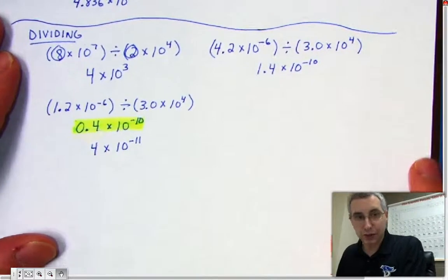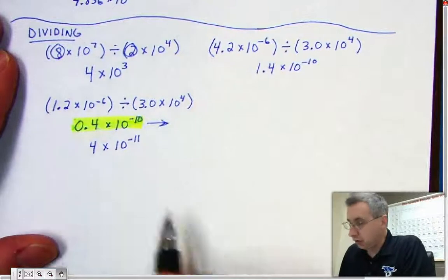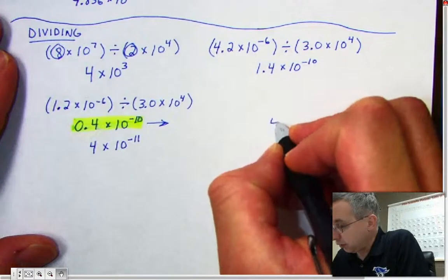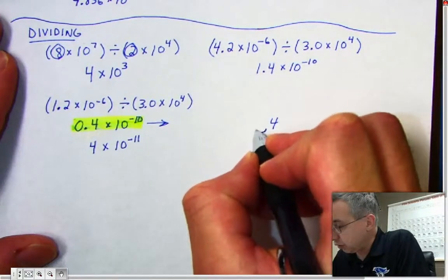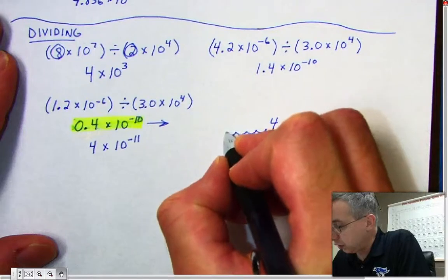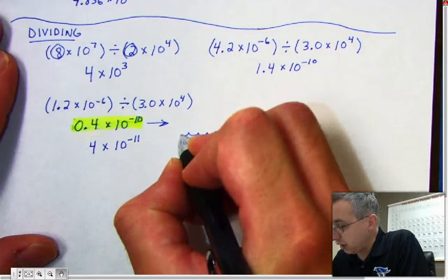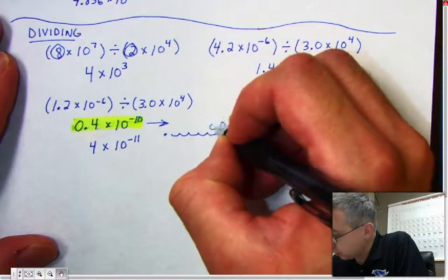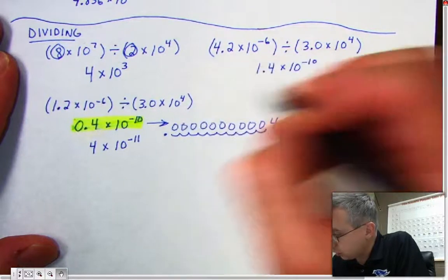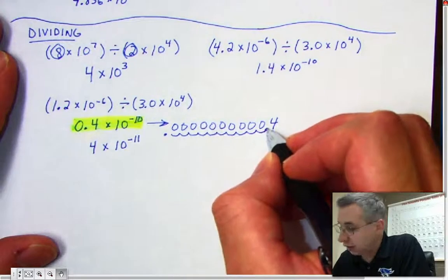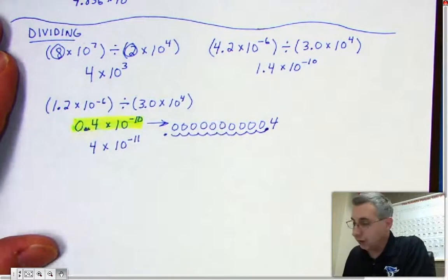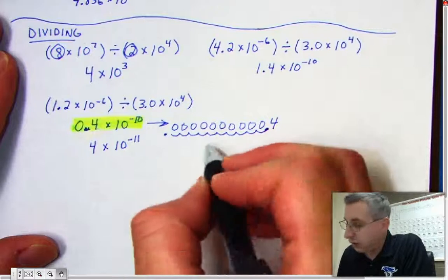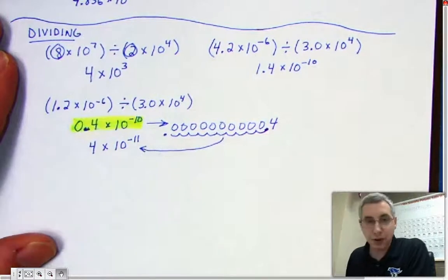Let's do the same kind of confirmation with the division problem. The improper scientific notation was 0.4 times 10 to the negative 10th. Starting here and going over 10: 1, 2, 3, 4, 5, 6, 7, 8, 9, 10. Write in the zeros — notice I began with the decimal here because that's what the improper scientific notation told me to do, then moved over 10. This is now standard notation. All I have to do now is convert back into scientific notation using the proper procedure.